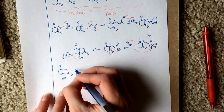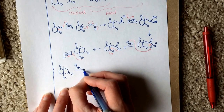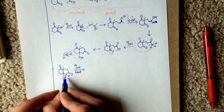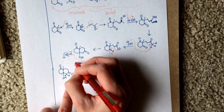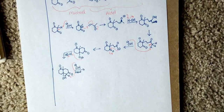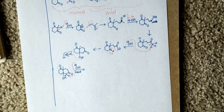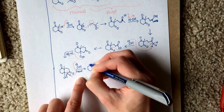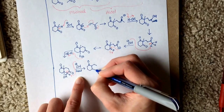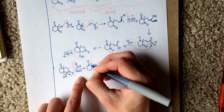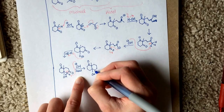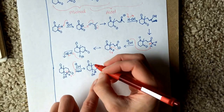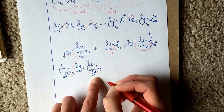Then we're going to heat it up to finish the aldol addition and let the aldol condensation process take place. That is a very tiny alpha hydrogen right there. For the aldol condensation, we're going to deprotonate another alpha hydrogen again, and the carbon-hydrogen electrons are going to come in as a lone pair.